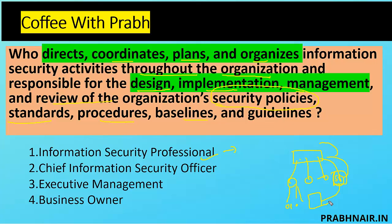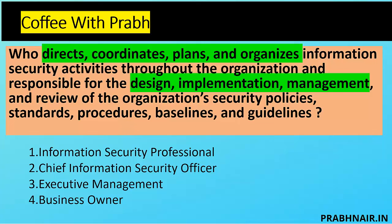But the question is talking about 'direct and coordinate.' Executive management will not be involved in coordination, planning, and organizing of information security activity — that is not their subject matter role. Business owner will be responsible for their respective area. We're left with two options: information security professional and CISO. The answer is B, Chief Information Security Officer. The reason: the CISO is the one who directs after understanding the business requirement — he coordinates, plans, and organizes the information security activity.